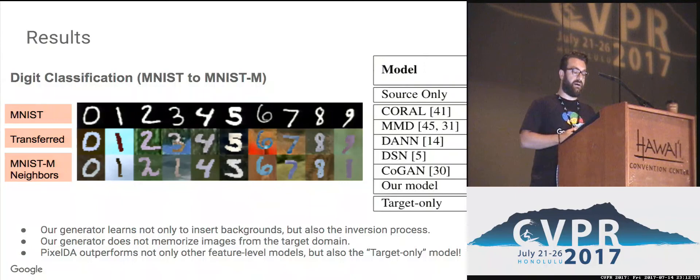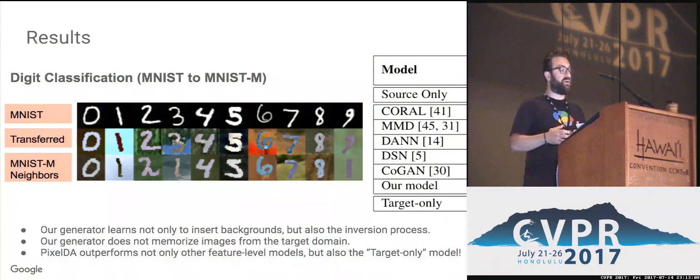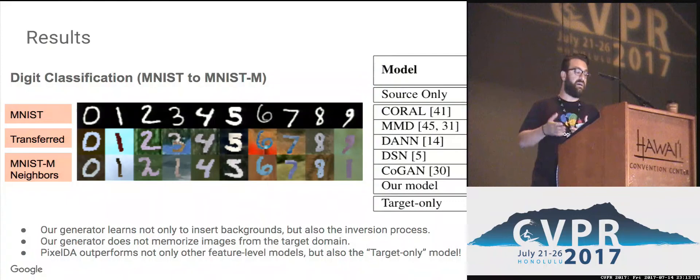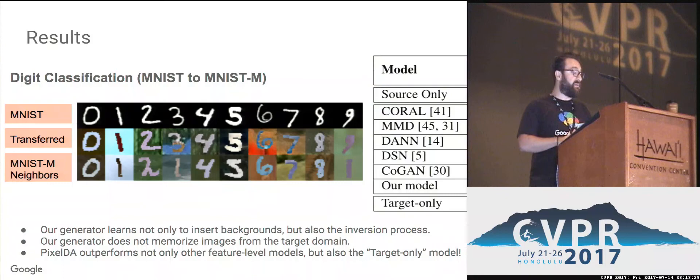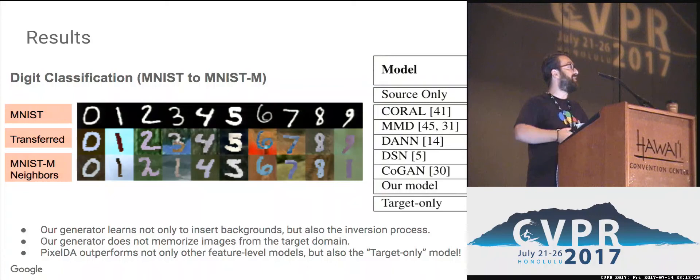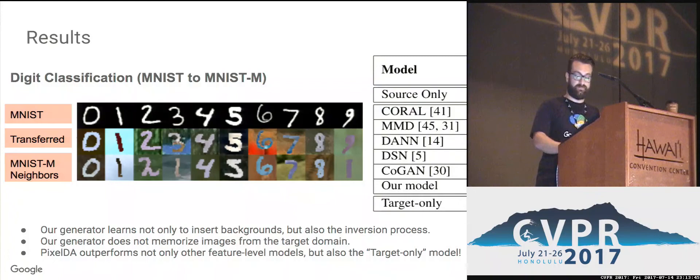We compare our model against many feature-level domain adaptation techniques. First, our generator is able to learn the underlying generative process for MNIST-M — notably it doesn't only learn to insert backgrounds but is actually learning the inversion process, clearly visible at digits three and six. Second, our generator does not memorize images from the MNIST-M domain. Third, and most importantly, PixelDA outperforms not only the feature-level models but actually does better than the target-only results — the results we would hope to get if the entire target training set were labeled and available to the task model. This is a very important result.